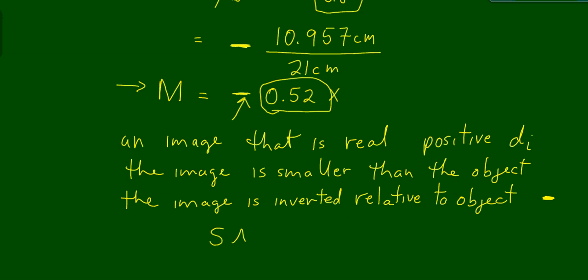That's indicated by the negative sign in front of the magnification. In terms of SALT, the acronym for Size, Attitude, Location, and Type: the size is smaller by roughly one-half; its attitude is inverted due to the negative sign; its location is approximately 11 centimeters from the optic center; and the type is real as indicated by the positive sign with d_i.